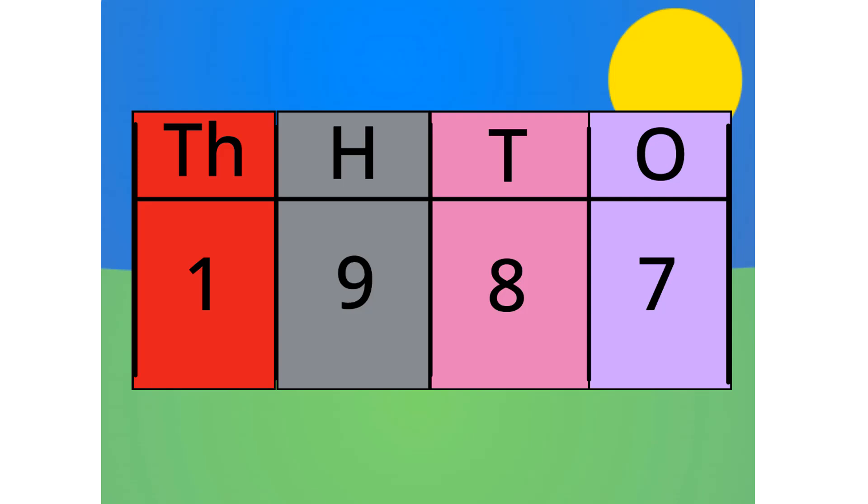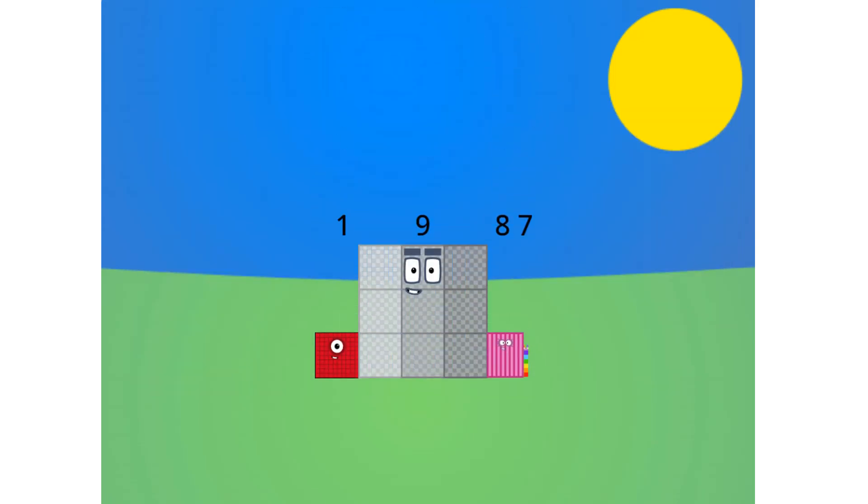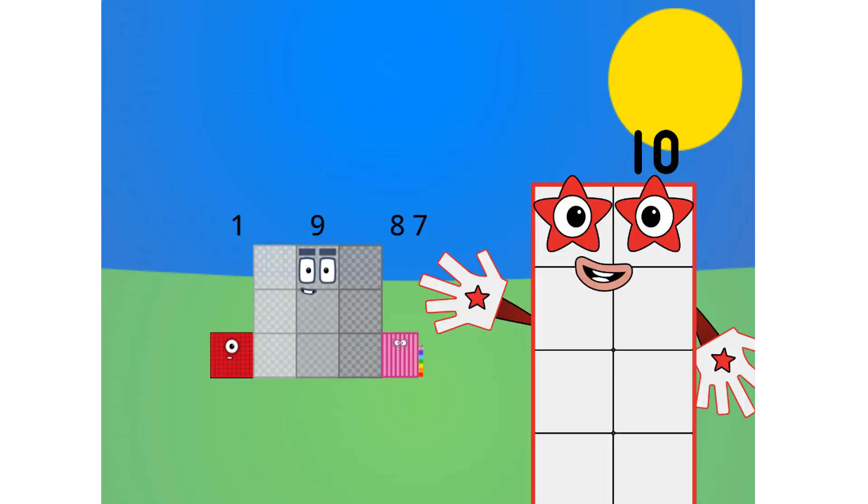Let's see this in block form, shall we? As you can see, this number is 1 thousand, 9 hundreds, 8 tens, and 7 ones.